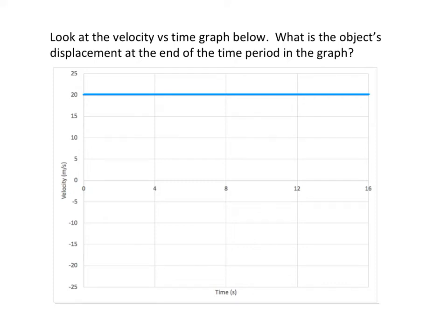All right, in this video we're going to see how to tell an object's displacement from a velocity versus time graph. So in this graph, the object is starting at a speed of 20 meters per second, and it maintains that same velocity for the entire duration of the 16 seconds. So the question is, at the end of this time period, where is the object?